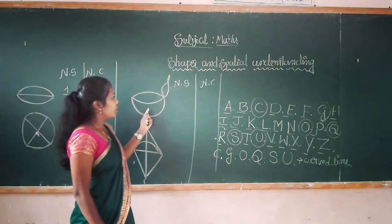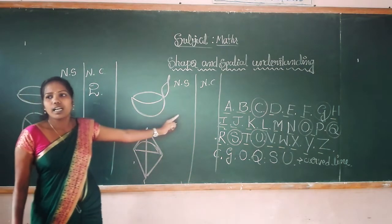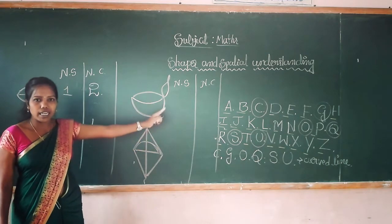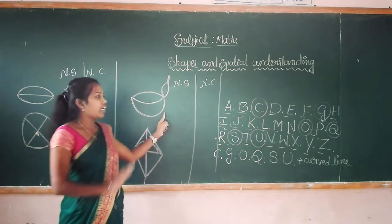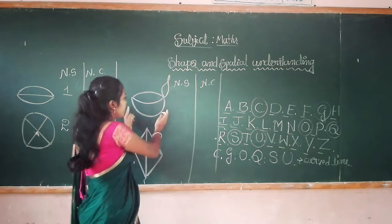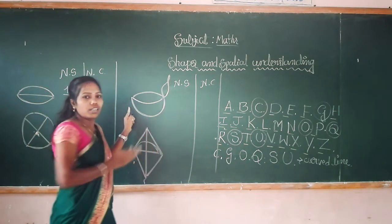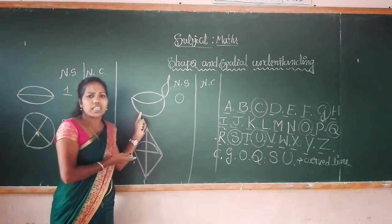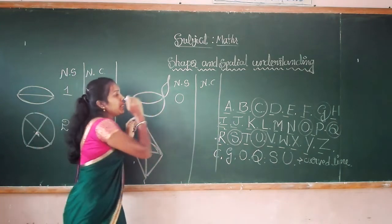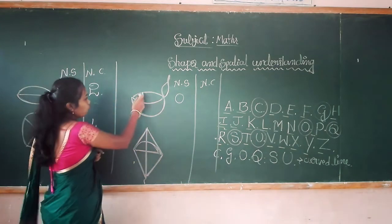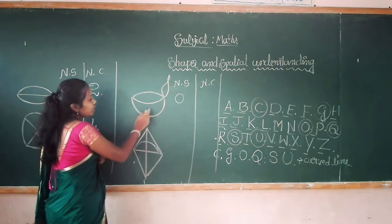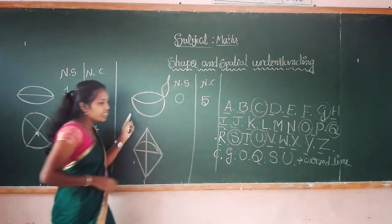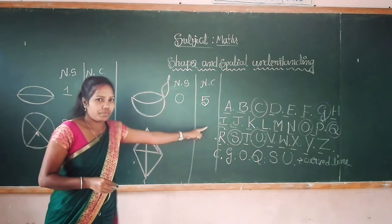Look at how many straight lines and how many curved lines in the given picture. How many straight lines? One, two — there are two straight lines. Then how many curved lines? One, two, three, four. Next picture: is there any straight line in the given picture? Look at carefully — there is no straight line. The number of straight lines in this picture is zero. Then how many curved lines? One, two, three, four, five — number of curved lines is five.